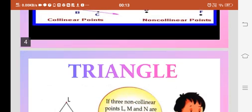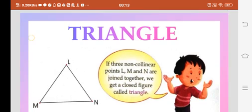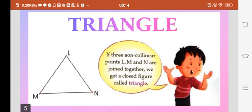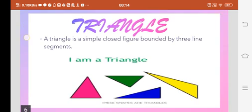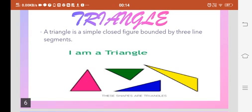What happens if I join three non-collinear points? Suppose three non-collinear points are L, M, and N. If I join all these three points, I get a shape called triangle. So what is a triangle? A triangle is a simple closed curve bounded by three line segments. Here you can see different types of triangles.